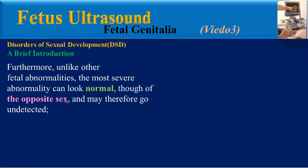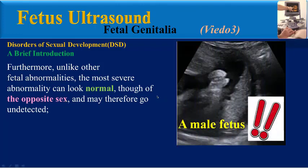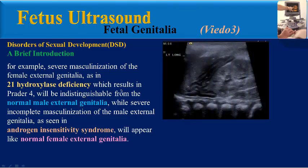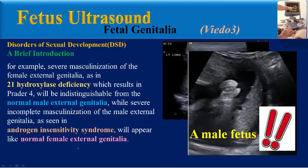The chromosomal sex is therefore not always readily available. Furthermore, unlike other fetal abnormalities, the most severe DSD abnormality can look normal — though of the opposite sex — and may go undetected. For example, severe masculinization of the female external genitalia as in 21-hydroxylase deficiency resulting in Prader 4 will be indistinguishable from normal male external genitalia, while severe incomplete masculinization as seen in androgen insensitivity syndrome will appear like normal female external genitalia.